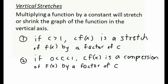Next let's briefly talk about vertical stretches. If we were to multiply our function by some constant number, this is either going to stretch or shrink the graph along the vertical axis or along the y-axis. We get two different cases: if our constant is greater than 1, then c times f(x) results in a stretch of our function by a factor of c. However, if our constant is between 0 and 1, then c times f(x) is what we call a compression of our original function f(x) by a factor of c.